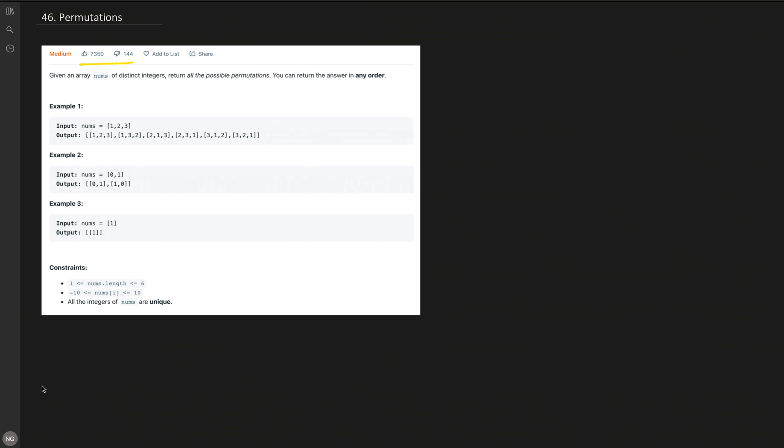The problem is: we are given an input integer array with all distinct integers and we need to return all possible permutations. We can return the permutations in any order. For example 1, we are given input array nums which has 3 integers: 1, 2, 3. If we have n numbers then we will have n factorial permutations. For 3 we will have 3 factorial permutations, that is 6. We will have 6 different permutations in the output.